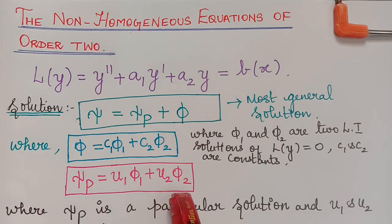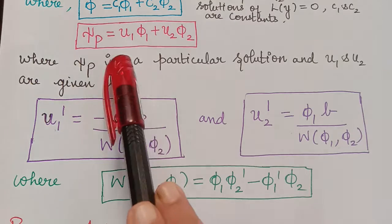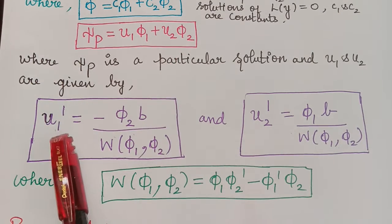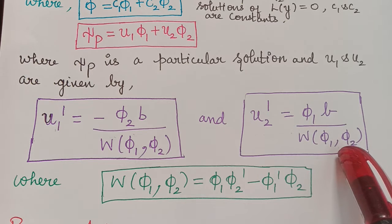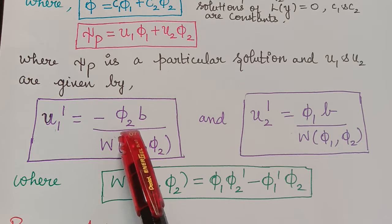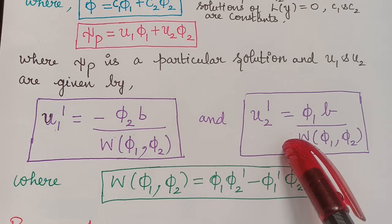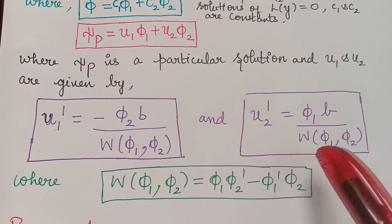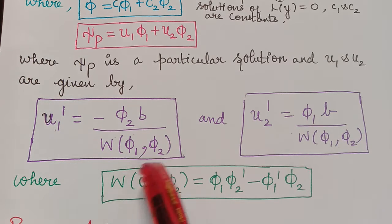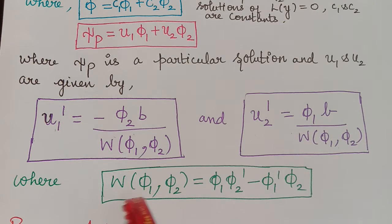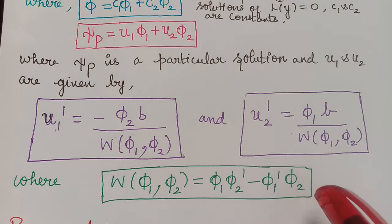The derivatives u1' and u2' are given by: u1' equals minus phi2*b divided by the Wronskian of phi1 and phi2, and u2' equals phi1*b divided by the Wronskian of phi1 and phi2. The Wronskian is evaluated using the formula: phi1*phi2' minus phi1'*phi2.